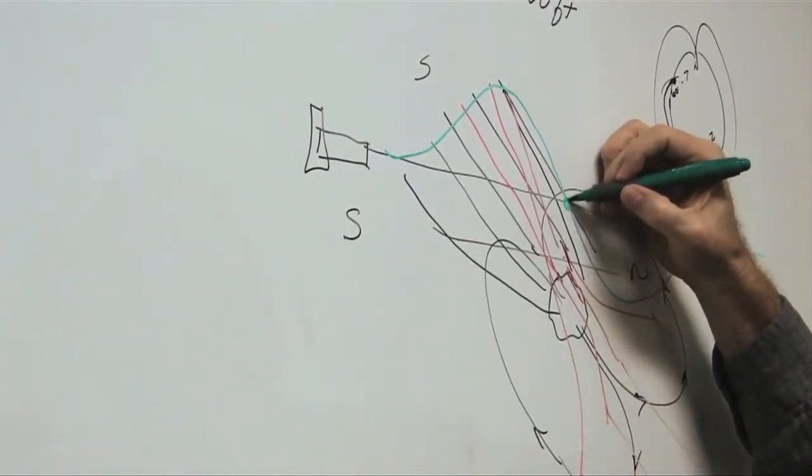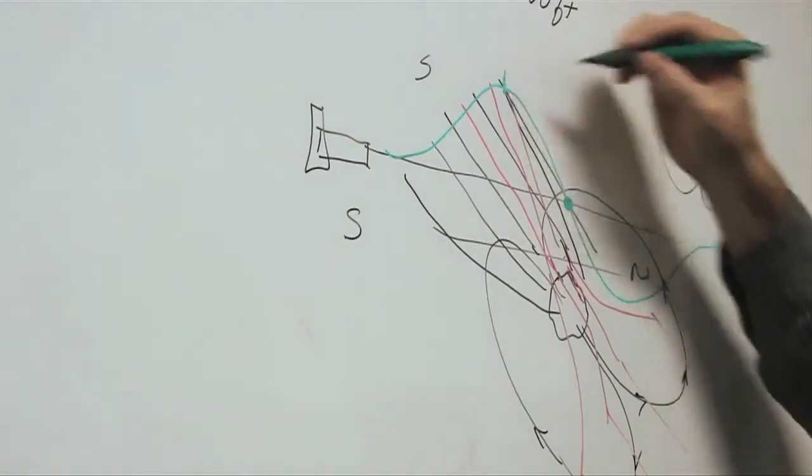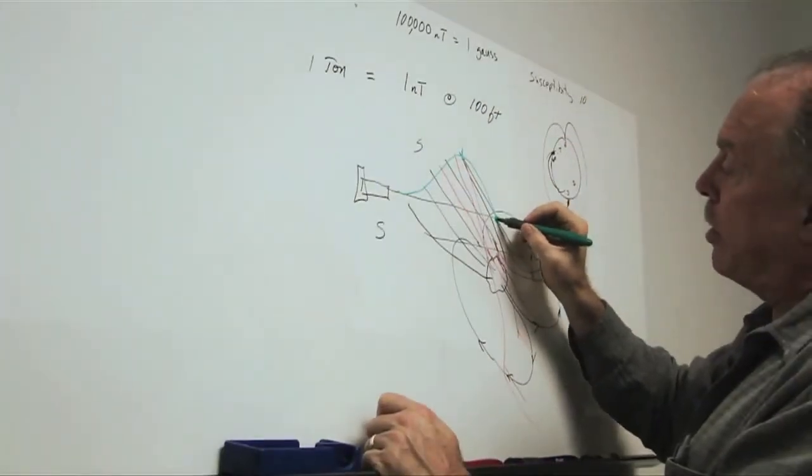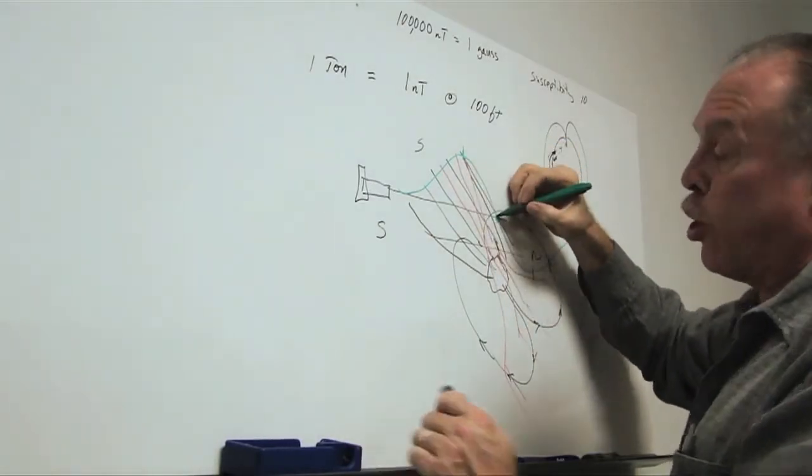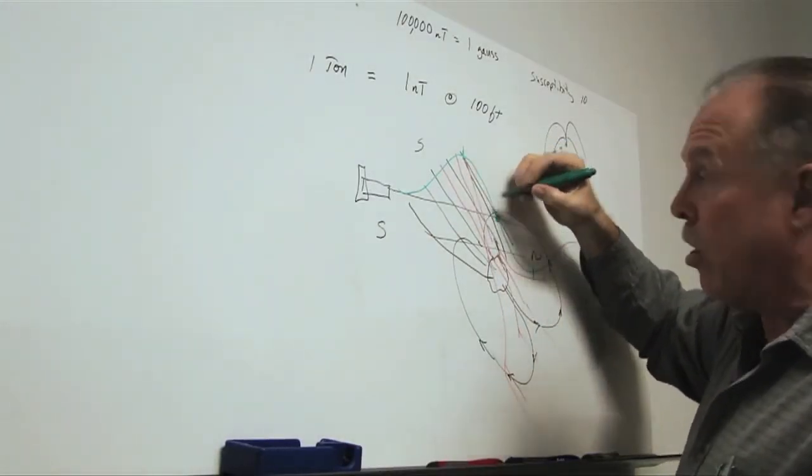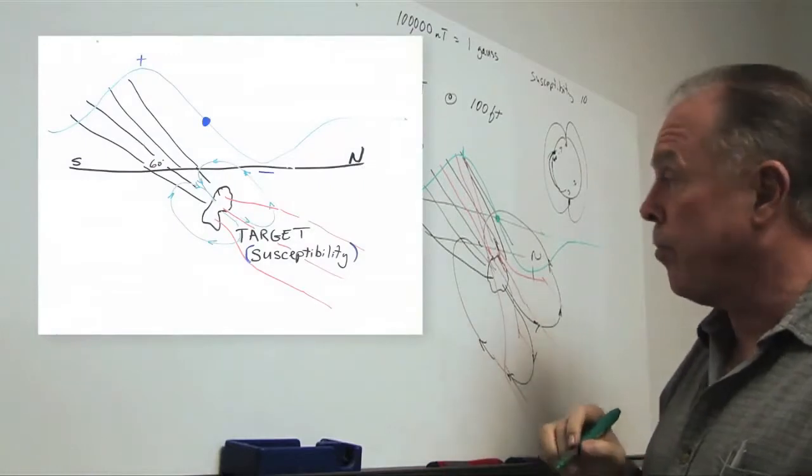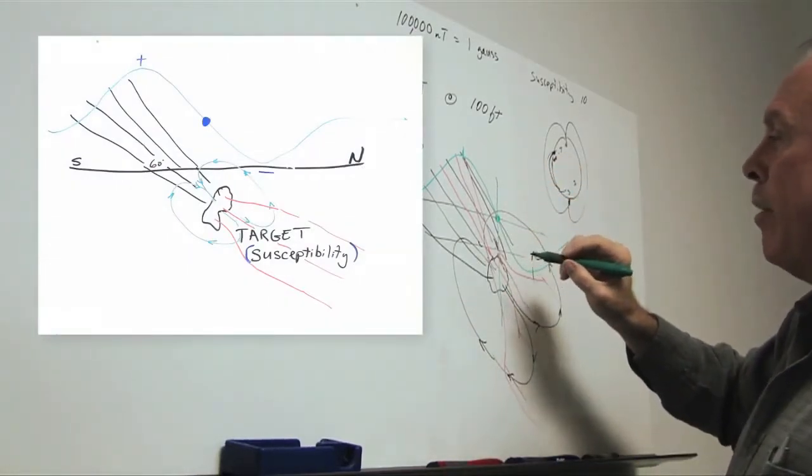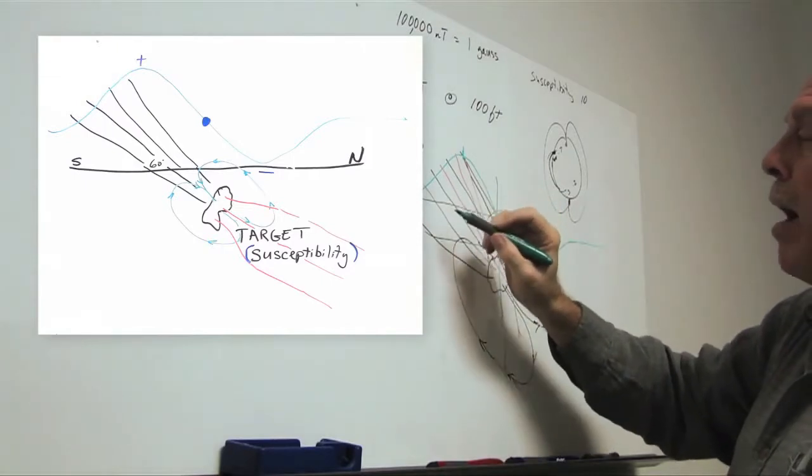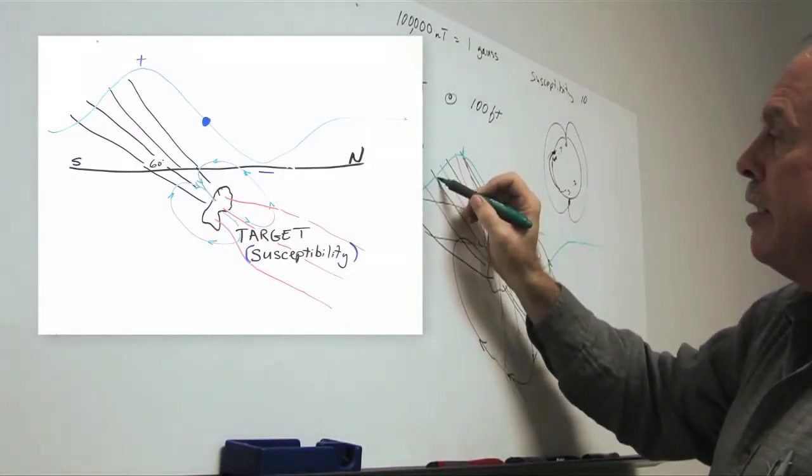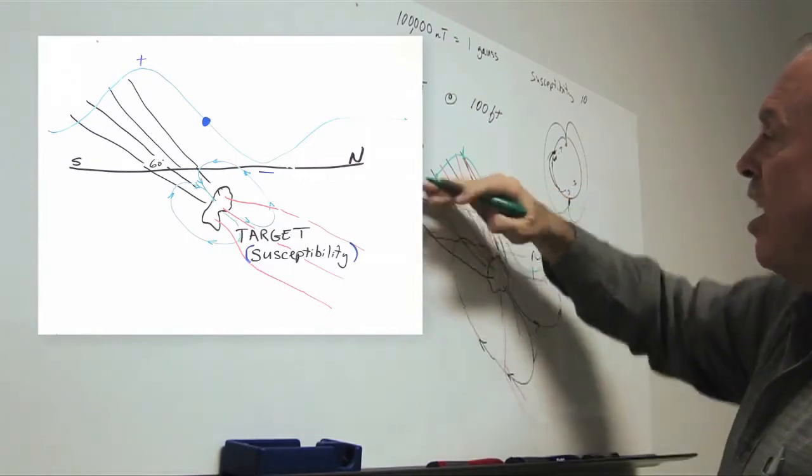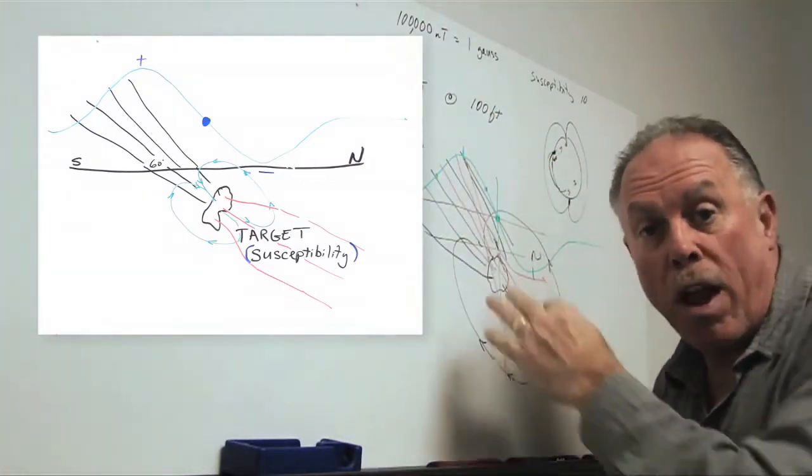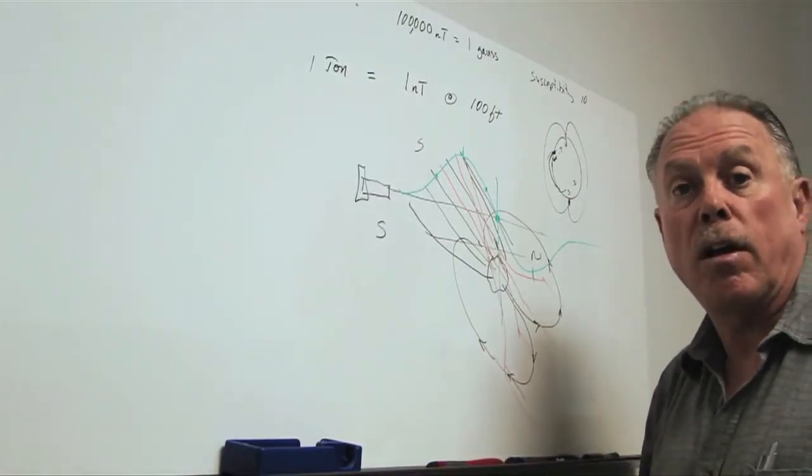And where the object is located is at the inflection point, which is midway between the high and the low, and essentially at the greatest slope between these high and low fields. So that's where the object is. And we can tell something about the object by the distance between the amplitudes and the distance of the, or the wavelength of the anomaly that we have measured.